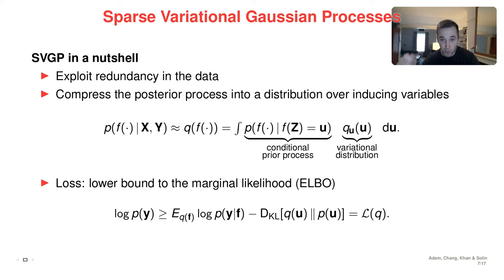We have this distribution qu that is left to specify and to learn. And this is done in variational inference by maximizing what is called the ELBO. It's a lower bound to the marginal likelihood and it can be expressed as a function of this q distribution. It typically has two terms. The first term is expected log likelihood, and the second term is a KL divergence between this distribution qu and the prior distribution pu. And I write this bound Lq.